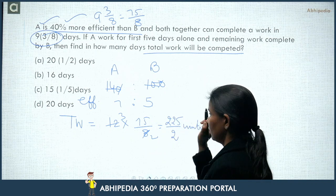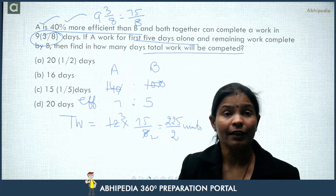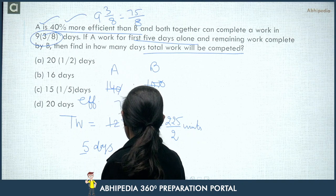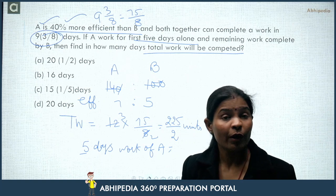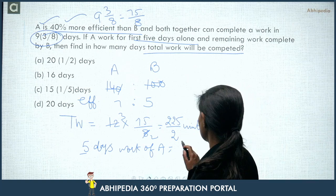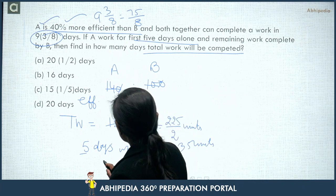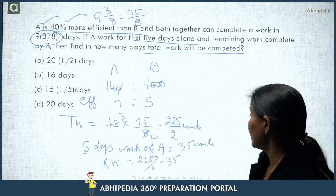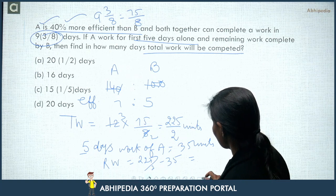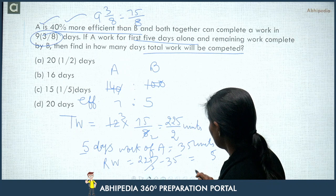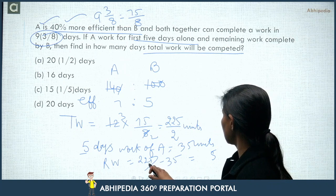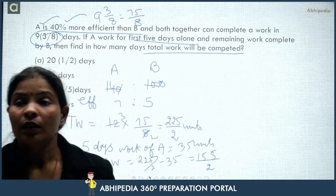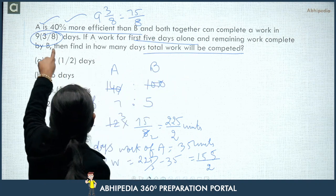A works for the first 5 days. A's efficiency is 7 units/day, so in 5 days A does 7×5 = 35 units. Remaining work = 225/2 − 35 = 225/2 − 70/2 = 155/2 units. This remaining work is done by B, whose efficiency is 5 units/day.